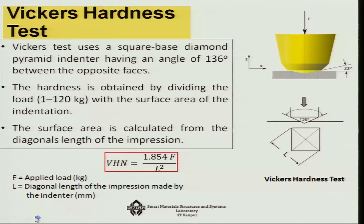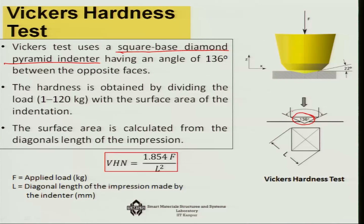Next is the Vickers hardness test. Unlike the Brinell test, the indenter shape is different — it is a square-base diamond pyramid indenter with an angle of 136 degrees between opposite faces. The hardness is obtained by dividing the load, generally 1 to 120 kg, by the surface area of the indentation, which is calculated from the diagonals of the impression.